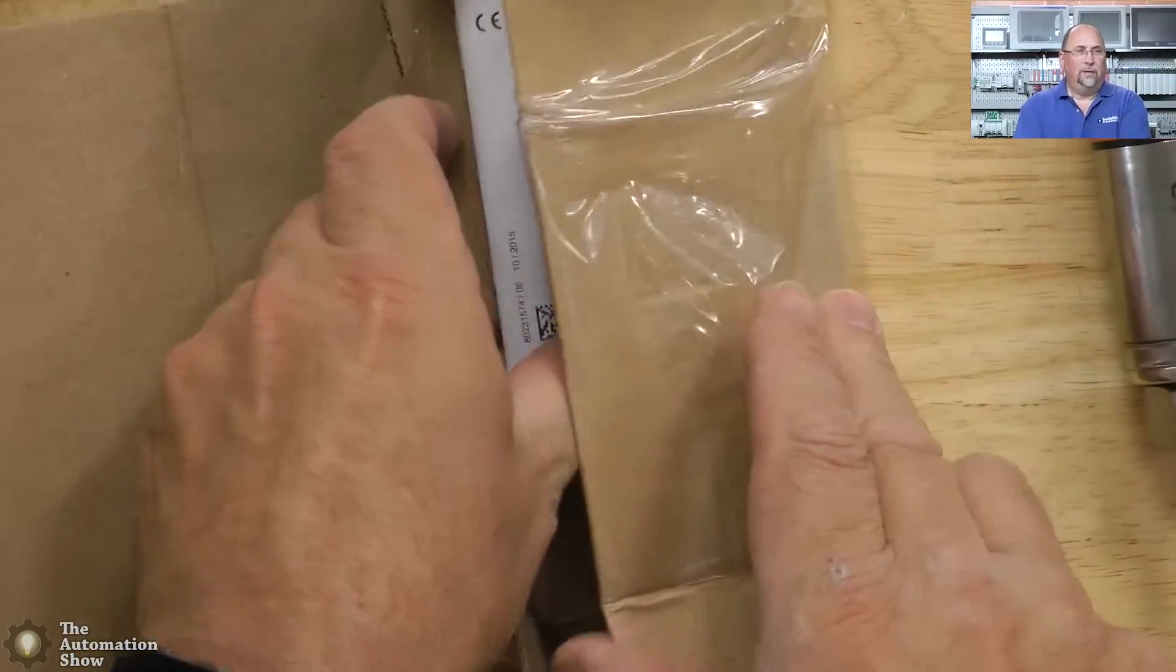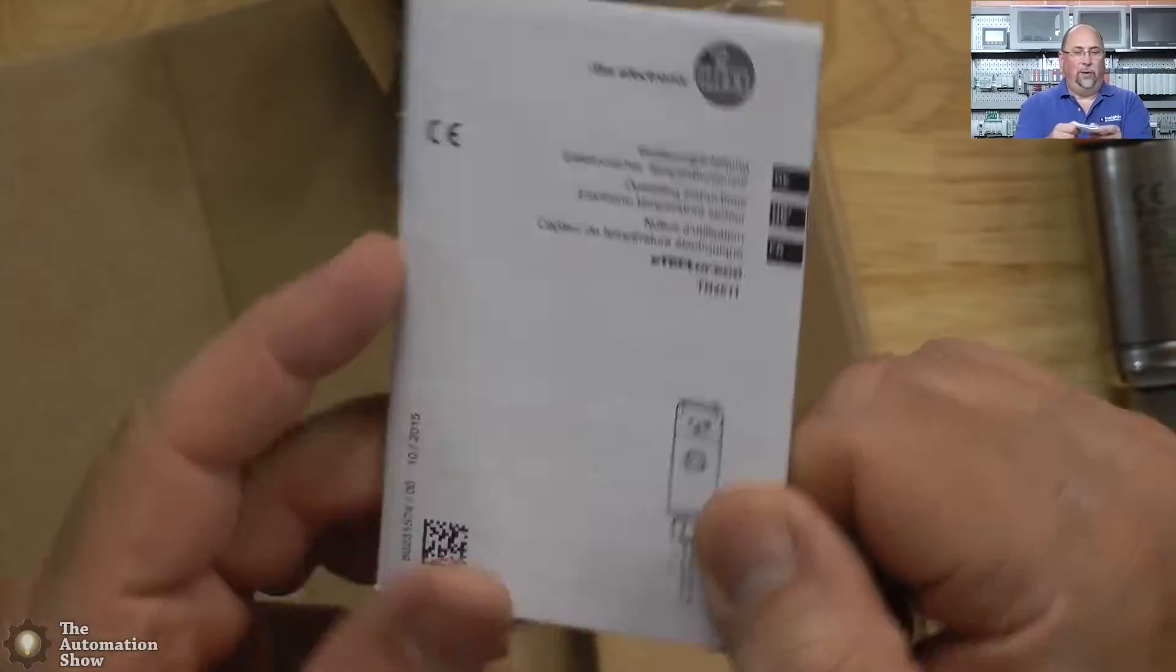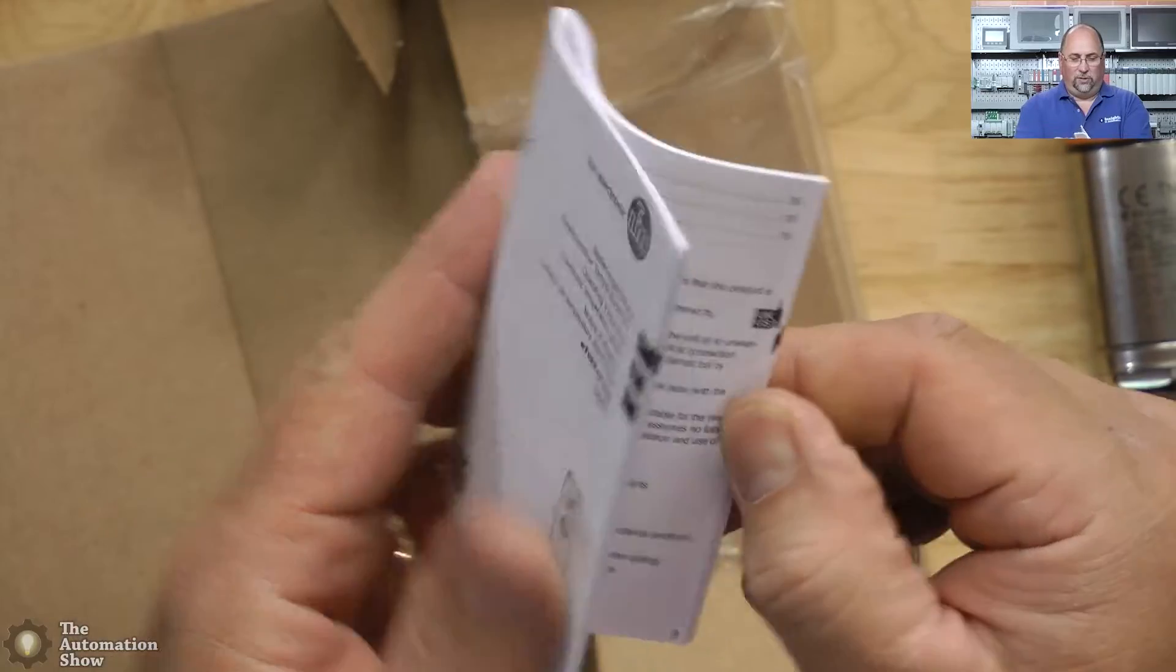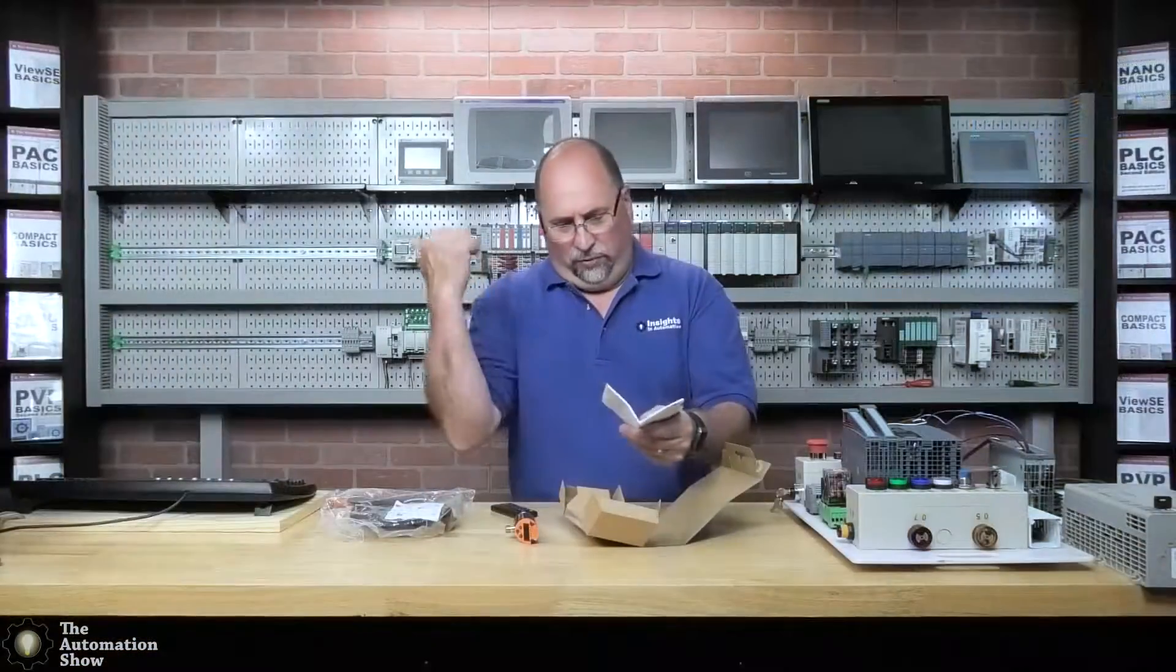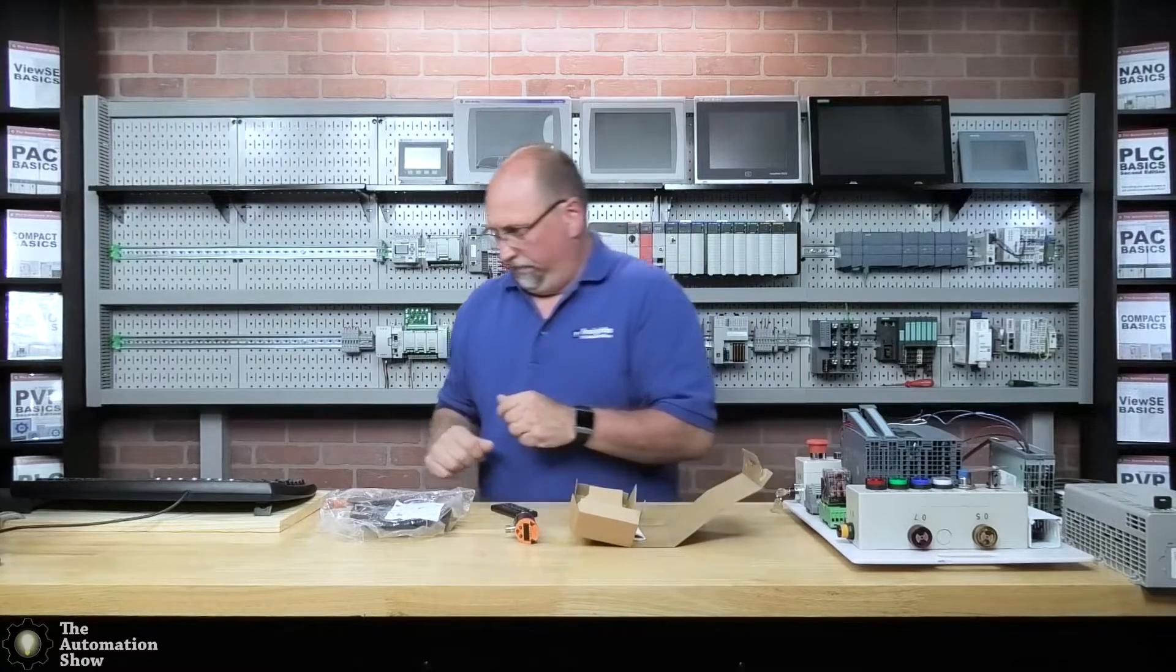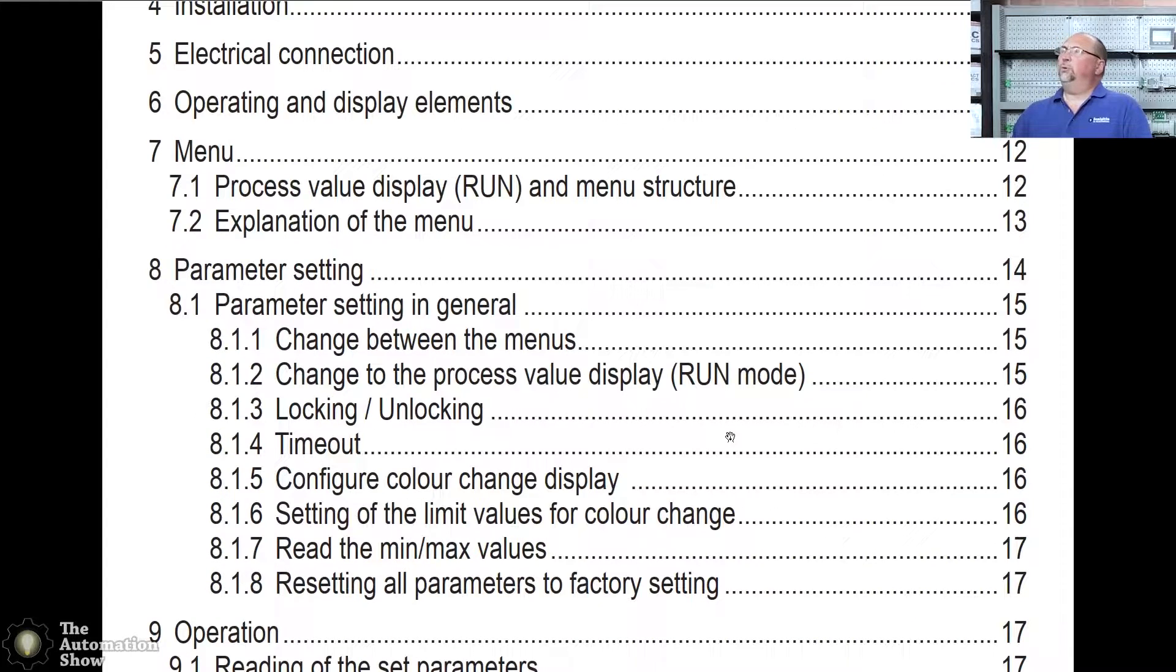Also in the box is a little manual. Now this is really small print, so I think we're going to take a look at the PDF instead over there on the PC. So let's go ahead and do that. All right, here's the manual. I'll put a link to this in the description.